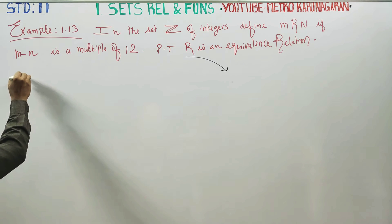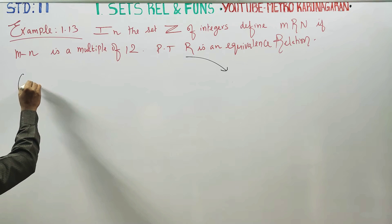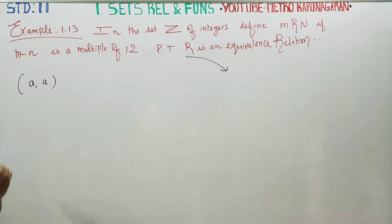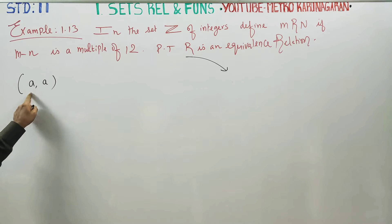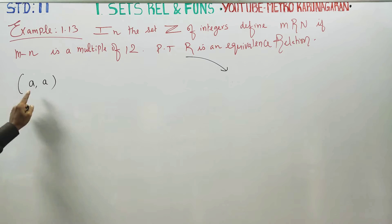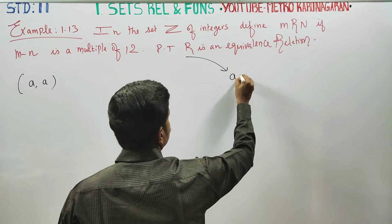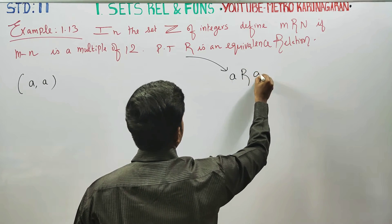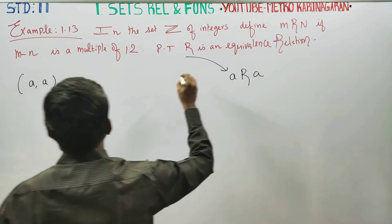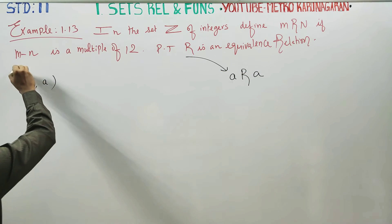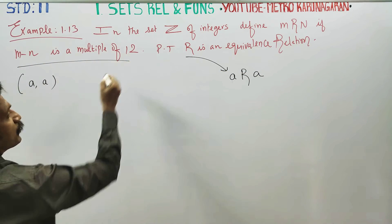What is reflexive? Reflexive means you choose the same integers. Same integers you choose. Who fulfills this condition? It must be a multiple of 12.